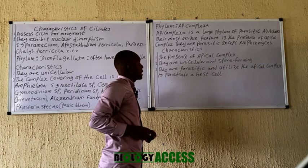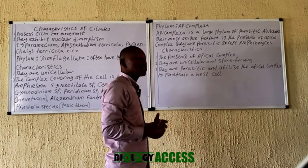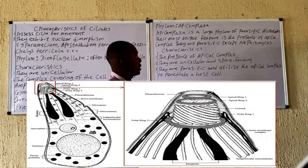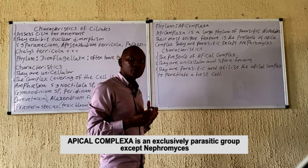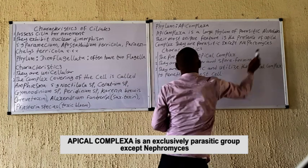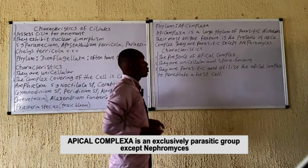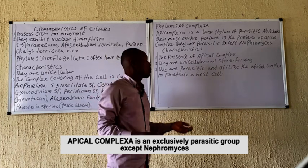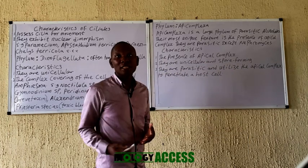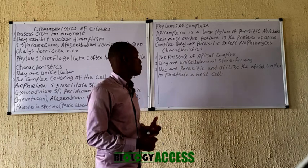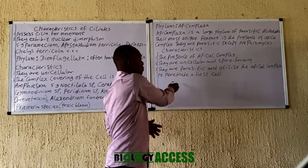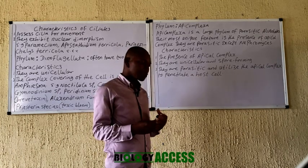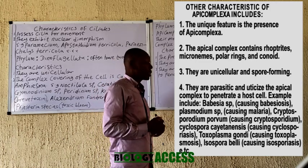The last phylum under the Alveolata is Apicomplexa — a unique group that possesses a unique feature called the apical complex, whose components are displayed on the board. This group is exclusively parasitic, except for Nephromyces. Their characteristics include possession of the apical complex, being intracellular, spore-forming, and parasitic. They utilize the apical complex to penetrate the host cell.